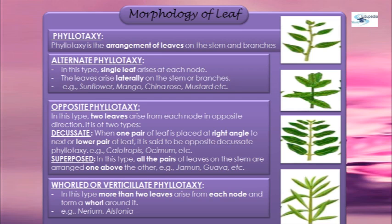So what is phyllotaxy? Phyllotaxy is the arrangement of leaves on a stem and branches. Phyllotaxy is of three types: alternate phyllotaxy, opposite phyllotaxy, and whorled or verticillate phyllotaxy.